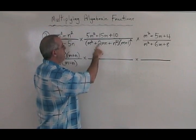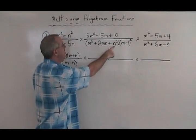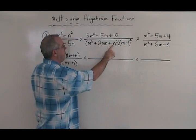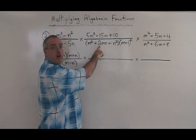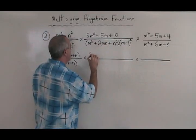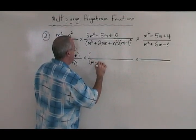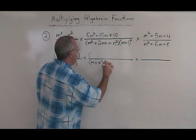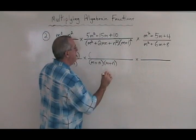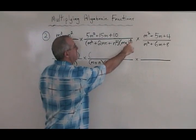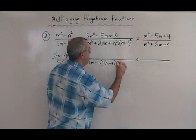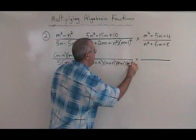The denominator here starts with a trinomial. What two numbers multiply to give 1 and add to 2? The answers are 1 and 1. So you get m plus n, m plus n. And then this m plus 1 squared, I can just write separately: m plus 1, m plus 1.